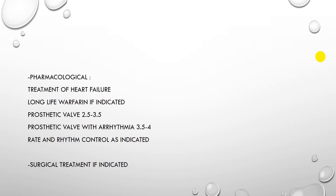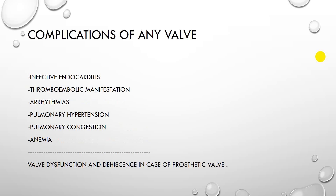The pharmacological treatment would be treatment of heart failure, long-life warfarin if indicated, or long-life anticoagulation if indicated. In a prosthetic valve, the INR ratio is 2.5 to 3.5, and in a prosthetic valve with atrial fibrillation the INR is 3.5 up to 4. Rate and rhythm control as indicated in atrial fibrillation, and surgical treatment if indicated.